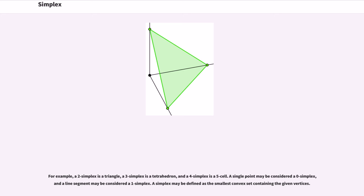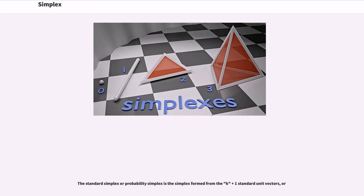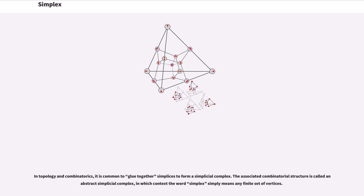A simplex may be defined as the smallest convex set containing the given vertices. A regular simplex is a simplex that is also a regular polytope. A regular n+1 simplex may be constructed from a regular n simplex by connecting a new vertex to all original vertices by the common edge length. The standard simplex or probability simplex is the simplex formed from the k plus 1 standard unit vectors. In topology and combinatorics, it is common to glue together simplices to form a simplicial complex. The associated combinatorial structure is called an abstract simplicial complex, in which context the word simplex simply means any finite set of vertices.